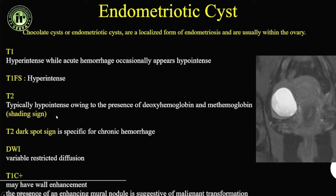The shading sign helps differentiate endometriotic cysts from hemorrhagic cysts. A hemorrhagic cyst will not have a shading sign because it is a one-time hemorrhage — it shows a network or mesh-like appearance from hematoma resolution. The shading sign is typical for endometriotic cysts and is seen even in cysts as small as 1 cm. The T2 dark spot sign is a sign of chronic hemorrhage — a very dark T2 spot eccentrically placed.